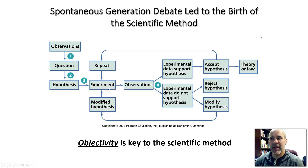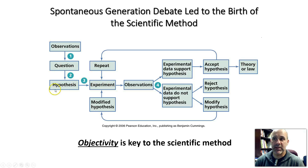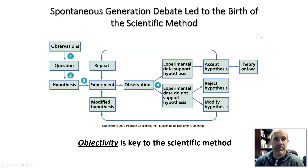An experiment doesn't necessarily mean you're in a laboratory manipulating something — it can mean collecting data and analyzing that data. For example, when the hypothesis first came forward that cigarette smoking leads to lung cancer, people were collecting data about smokers and non-smokers to see if more smokers developed lung cancer. Another type of experiment was to expose lab mice to lots of cigarette smoke and then check them to see if they were developing lung cancer.